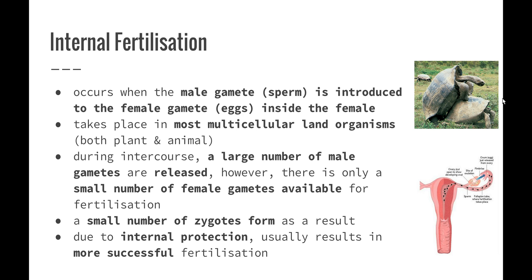During intercourse with animals, a large number of male gametes are released into the female. However, there is only a small number of female gametes available for fertilization. If we think about this in terms of humans, during ovulation usually only one egg is released by the female's ovaries and travels to the uterus. A large number of sperm are then introduced into the female, with the aim of one of those sperm fertilizing the egg. As a result, we have a small number of zygotes forming. During human reproduction, the majority of pregnancies result in only one baby being born. Due to the internal protection, we usually end up with a more successful fertilization.